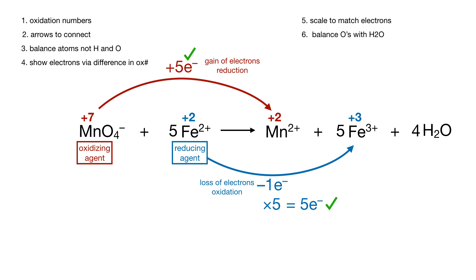There also happens to now be 8 hydrogens on the right, so we're going to balance those with hydrogen ions by putting those on the left side. We now have pretty much the entire thing balanced.